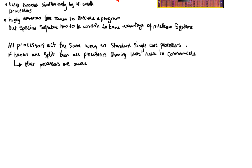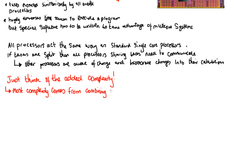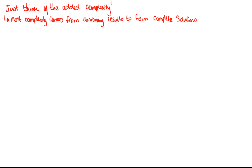If the tasks are split, all the processors sharing the tasks need to be able to communicate with each other so that other processors are aware of the changes being made to other parts of the program and can incorporate those changes into their calculations. If this didn't happen, we'd get miscalculations and errors. Most of the complexity comes from putting all of the results from each different processor together to form the complete solution.